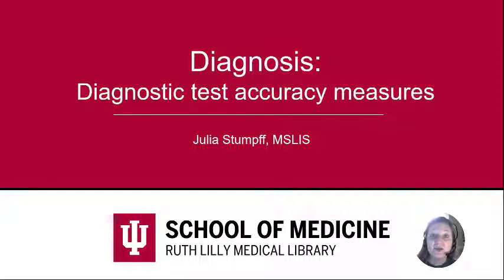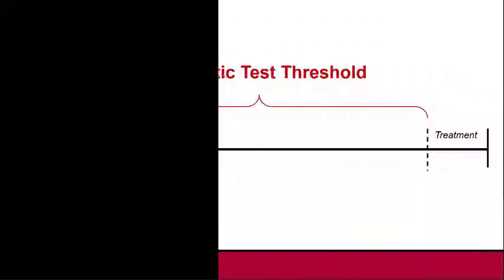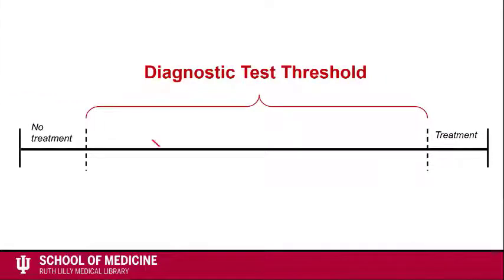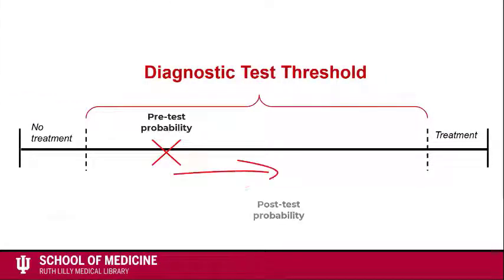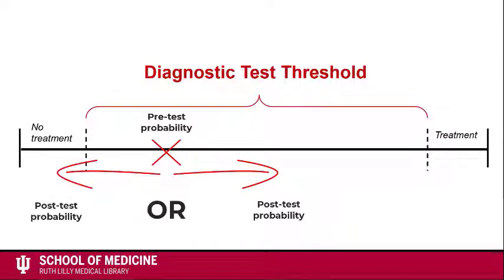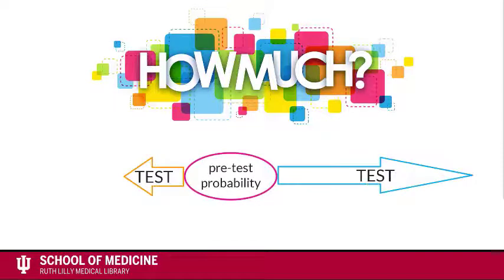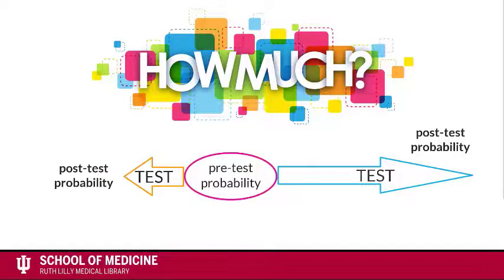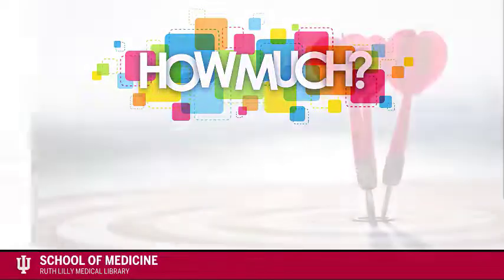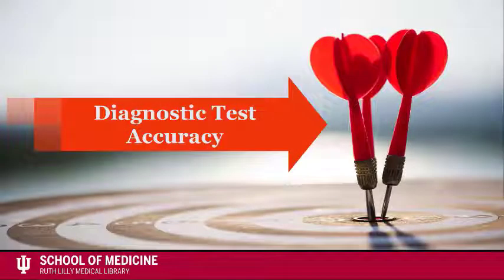In this video, we introduce measures of diagnostic test accuracy. In the previous video, we discussed that diagnostic test results move a clinician from pre-test probability to post-test probability. How much a diagnostic test moves the needle from pre-test probability to post-test probability is dependent on diagnostic test accuracy.